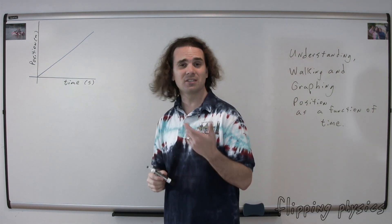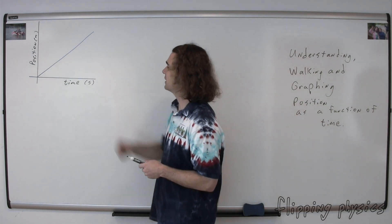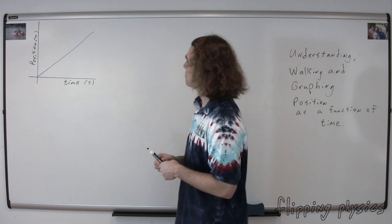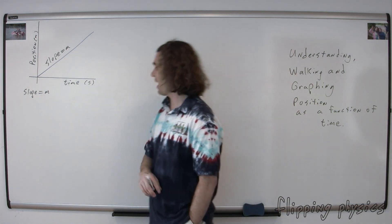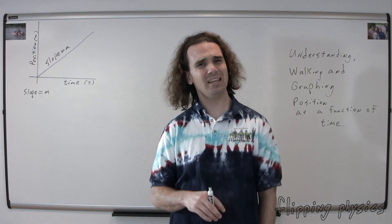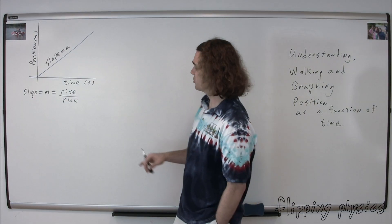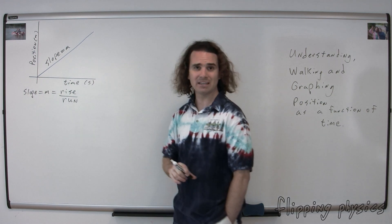Let's start with a single line on our position as a function of time graph, which I've drawn here. We're going to talk about the slope. Bo, what's the symbol for slope? I don't think I remember. It's a lowercase m. Oh, that's right, thanks. Great. The symbol for slope is a lowercase m. Billy, what is the slope of a line? The slope of the line is the rise of the line over the run of the line. Very good. The definition of slope is that it is the rise over run of a line.